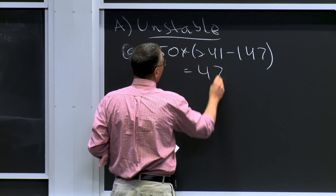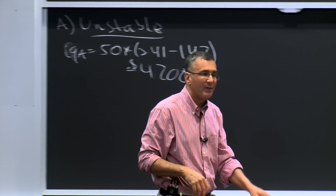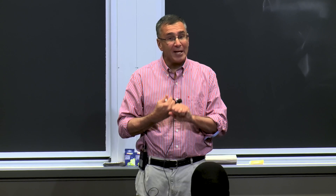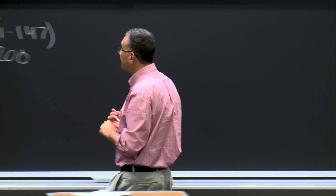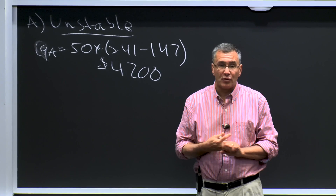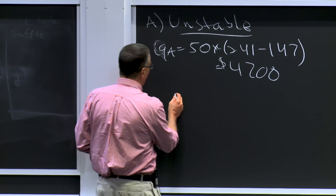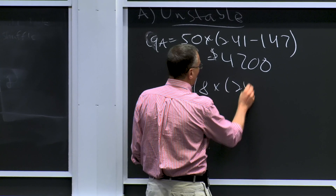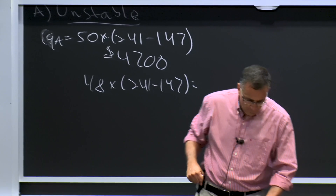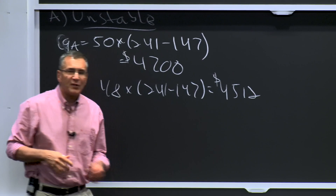Let me back up and do it again. They say they're going to do two more flights. We have to respect the demand curve, so there are going to be two more flights and the price has to fall to $241. They now make profits of $4,700. But if United is caught with their pants down and continues to do 48 flights, United's profits are 48 times ($241 minus $147). So American's profits are up and United's profits are down through American cheating.